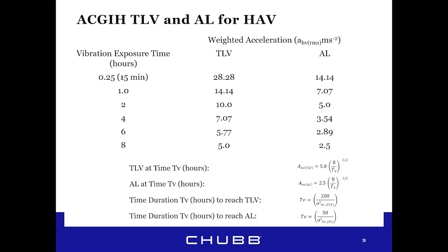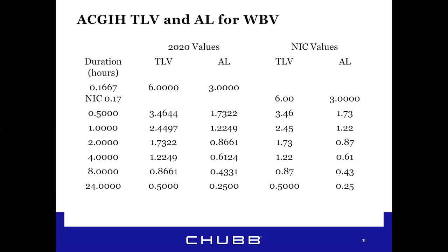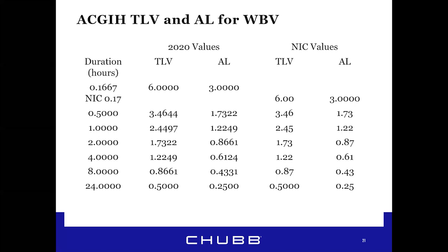Here's a table showing the TLV and action level broken down by hours as weighted acceleration — how much you could expose an employee to for 15 minutes per day versus an hour, versus two hours, going on to 10. The formulas at the bottom show that A equals the acceleration; vibration is measured in acceleration meters per second squared, and time is in hours. Fortunately, the instrument software calculates these for you, which is a huge time saver. A similar table shows the TLV and action levels for whole body vibrations. The notice of intended changes for 2021 anticipates rounding off some significant digits but does not anticipate changing the TLV values this year.